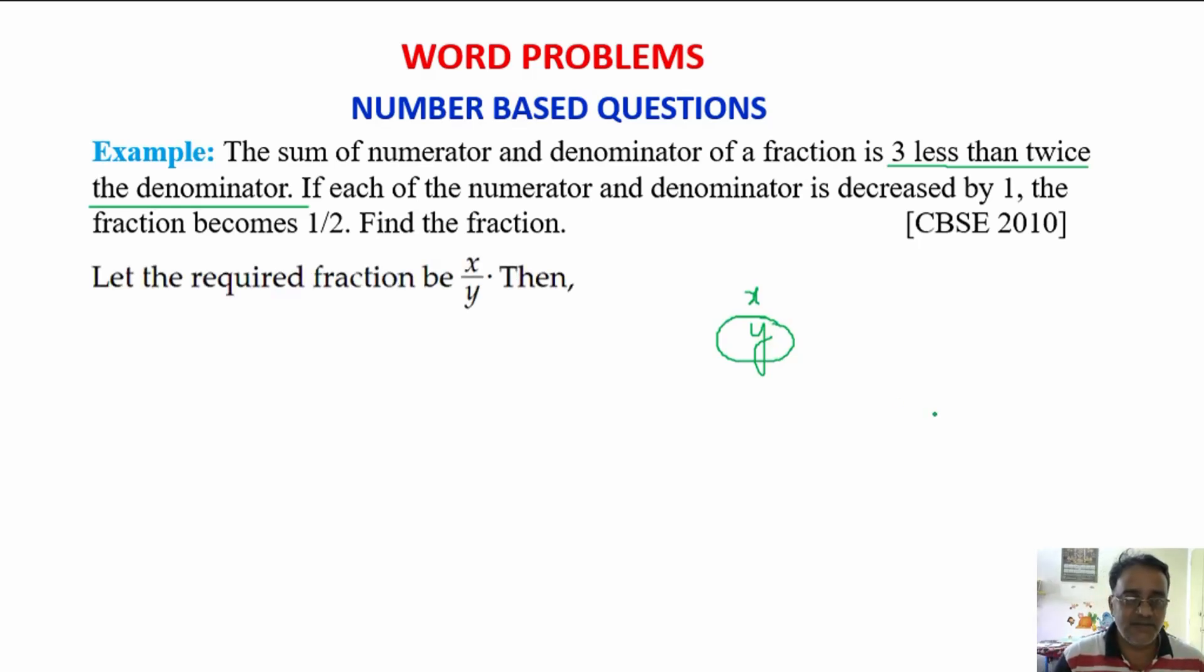So, we will start with first let the required fraction be x upon y, then x plus y, the sum of these two x plus y is equal to 2y minus 3. Whether this first condition is clear to all of you? Yes sir.